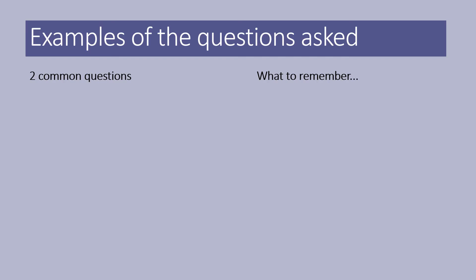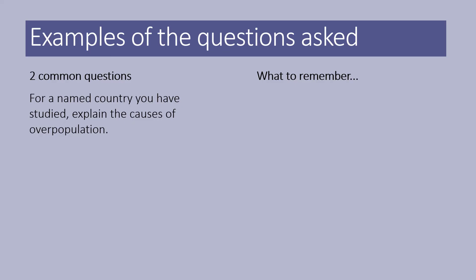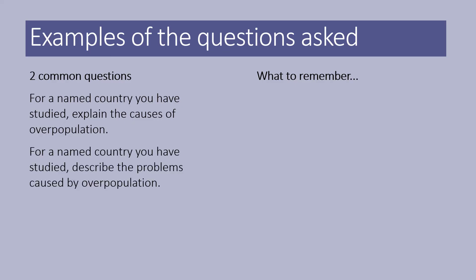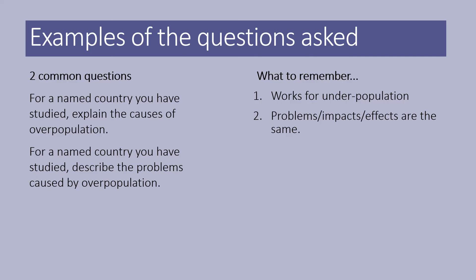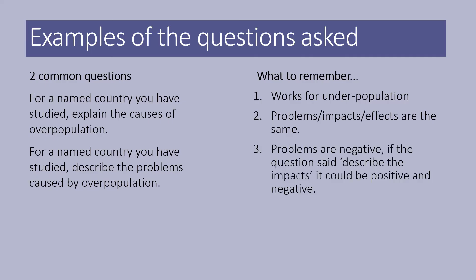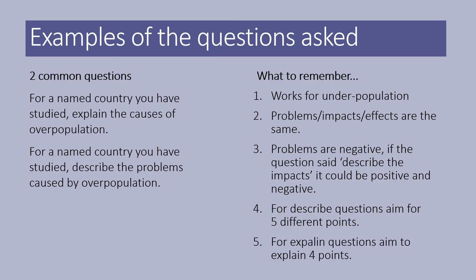Examples of questions asked for seven markers: based on going back to 2016 and looking at all seven markers, typically you need to explain the causes of overpopulation and describe the problems caused by overpopulation. Remember the same question can work for underpopulation — just replace the two. Problems, impacts, and effects are the same unless stated otherwise. For describe questions, aim for five different points. For explain questions, aim to explain four points.